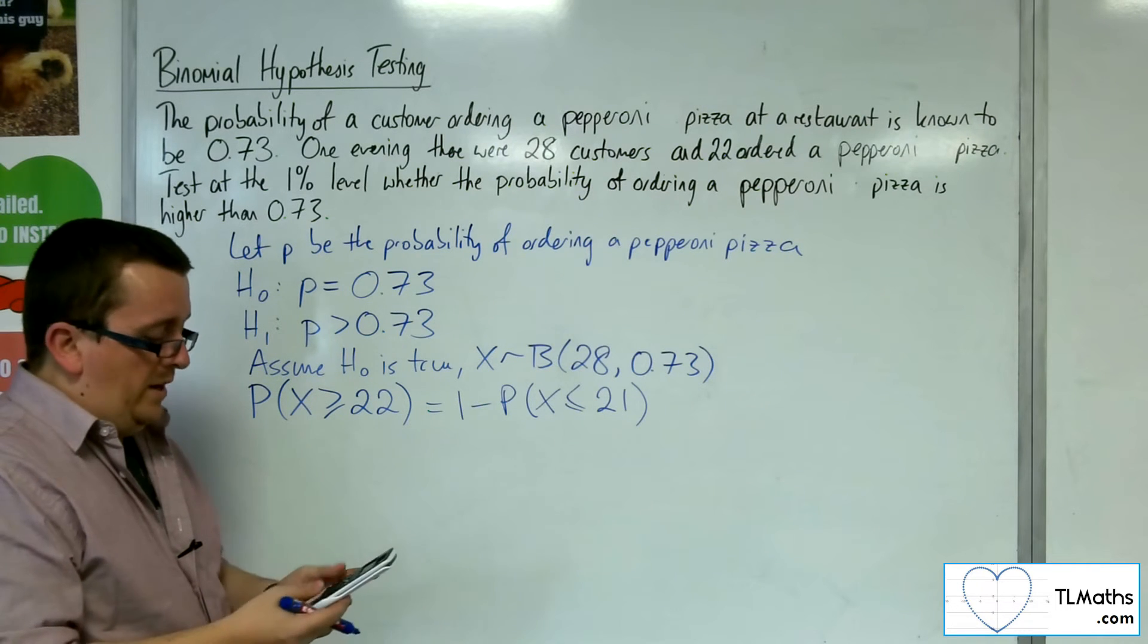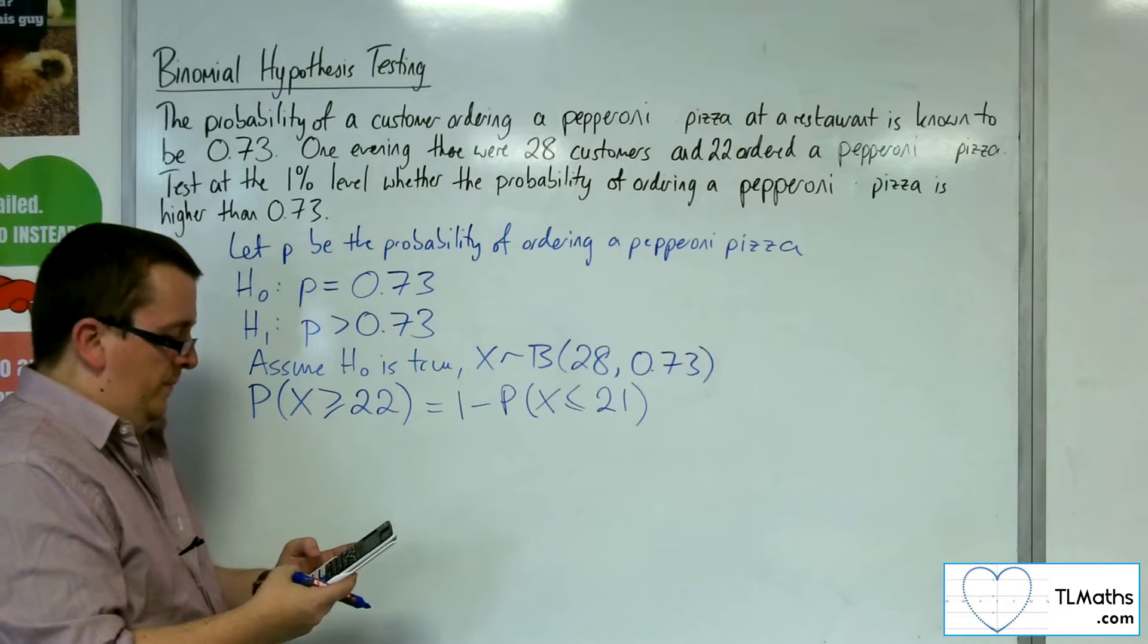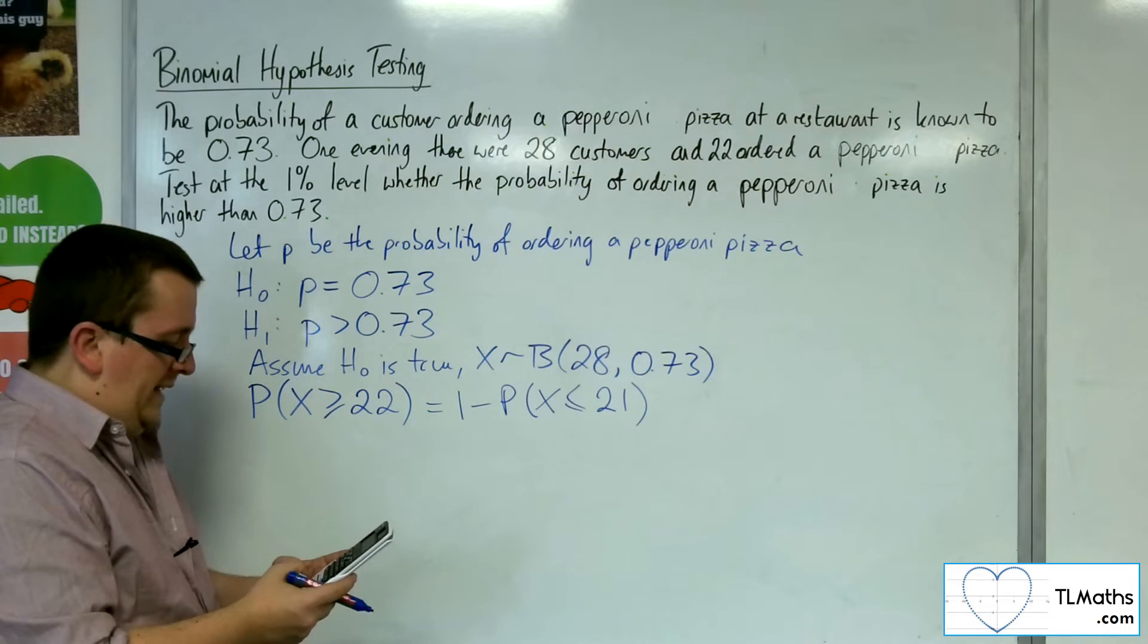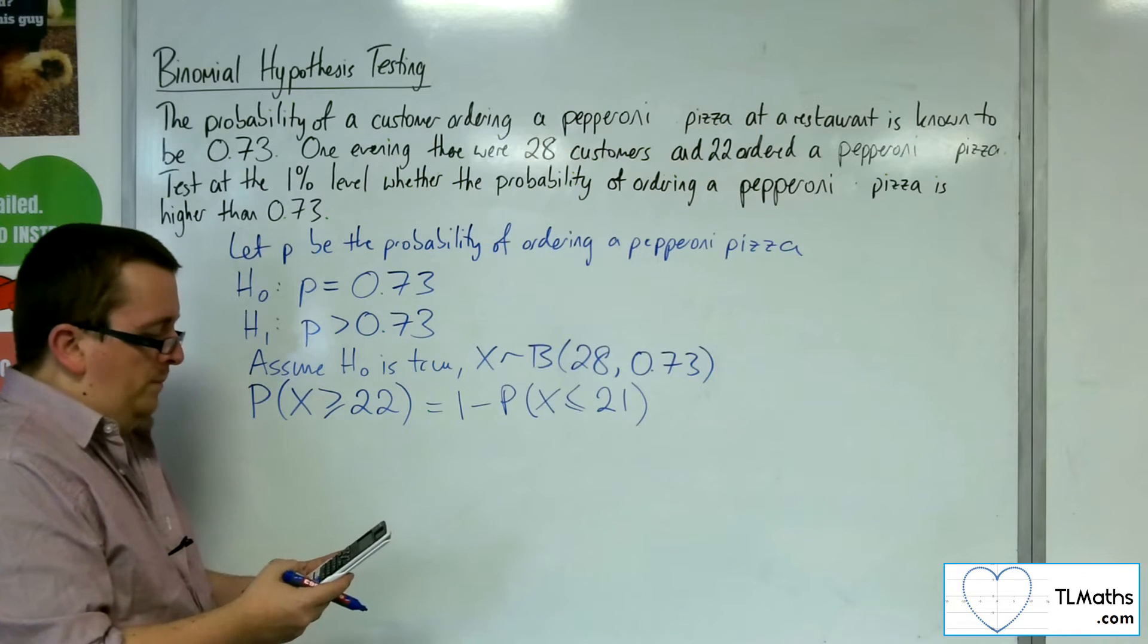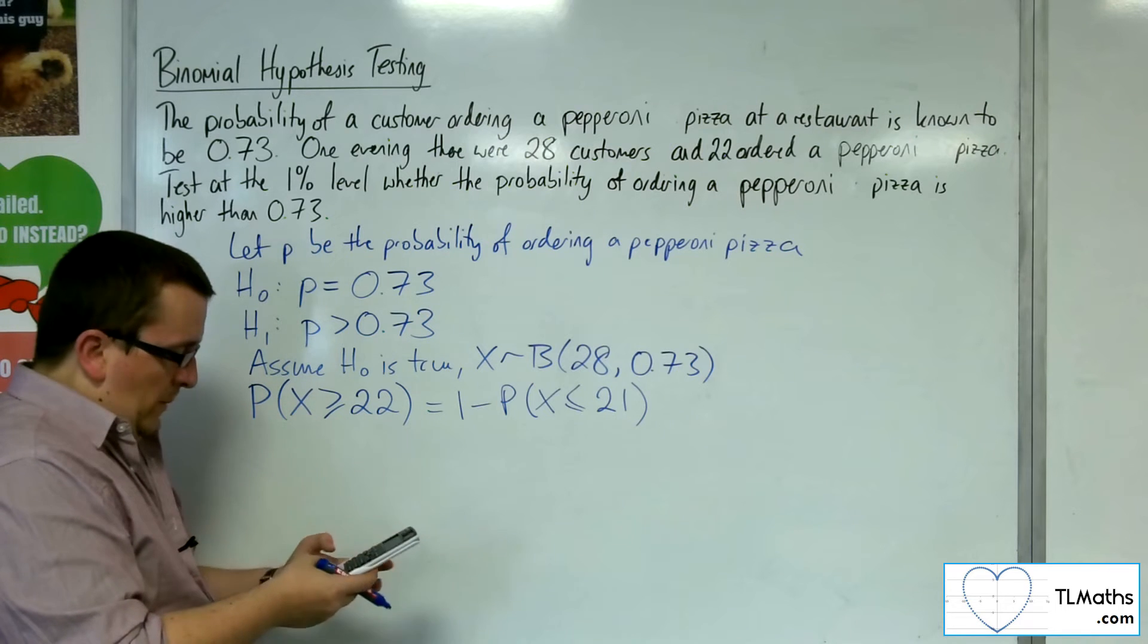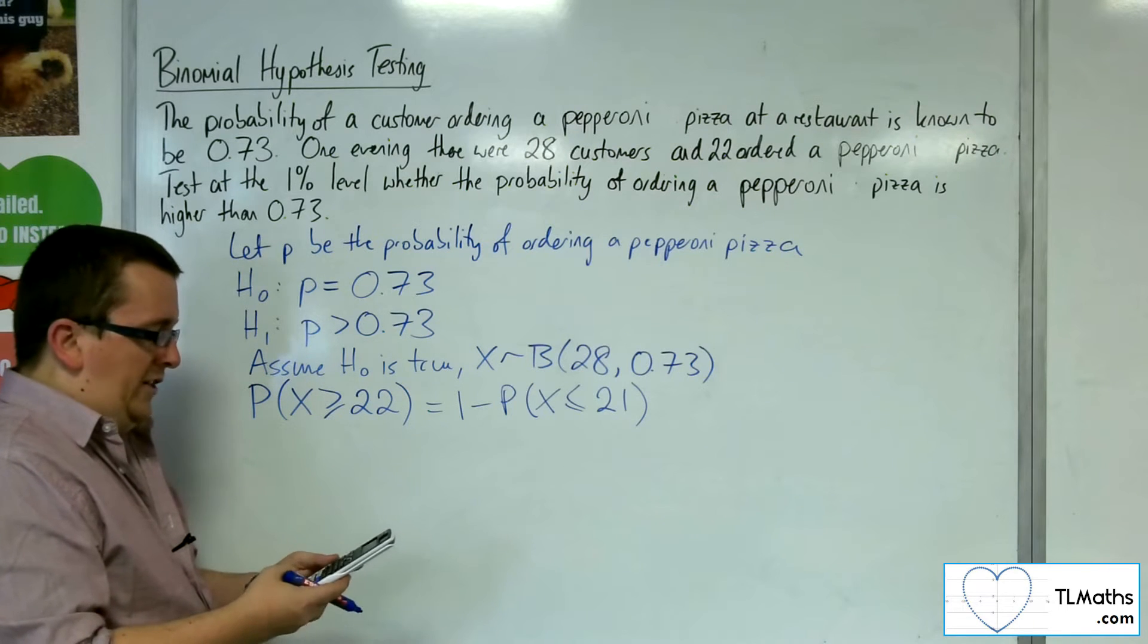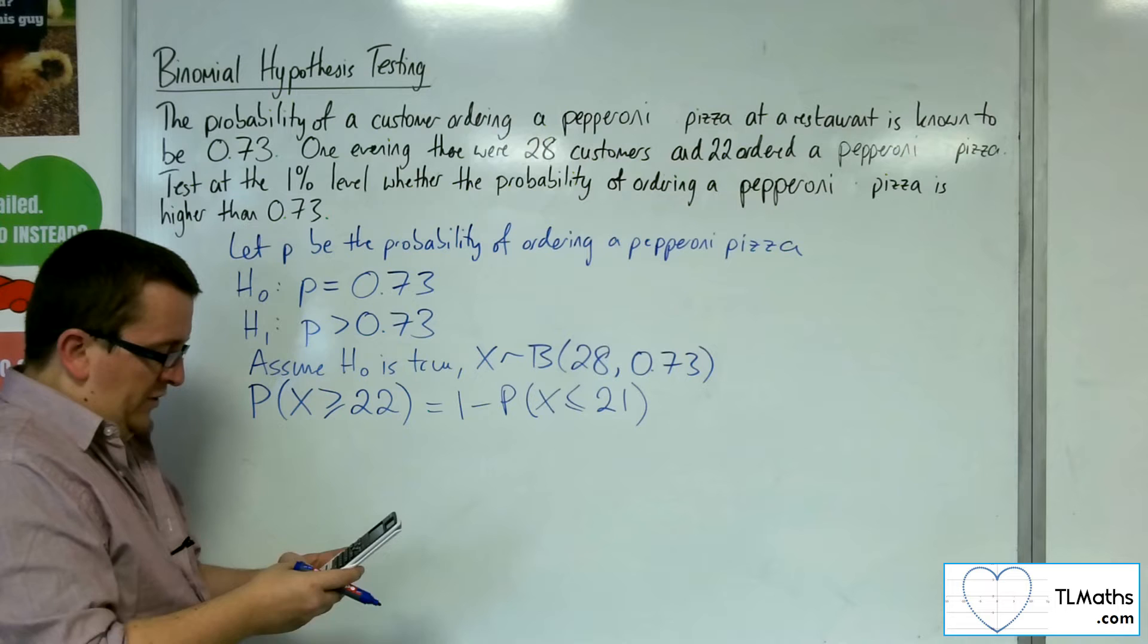We go to our calculator, option number 7 in the menu. Scroll down to binomial CD. The X is 21, the N is 28, and the probability is 0.73.